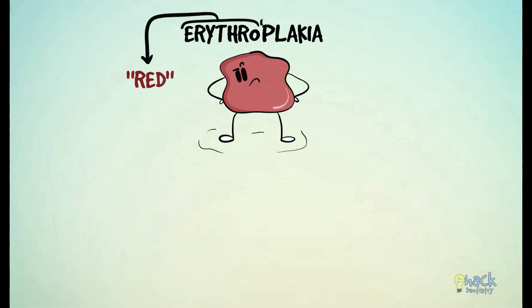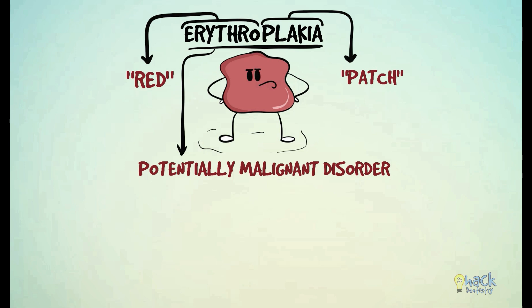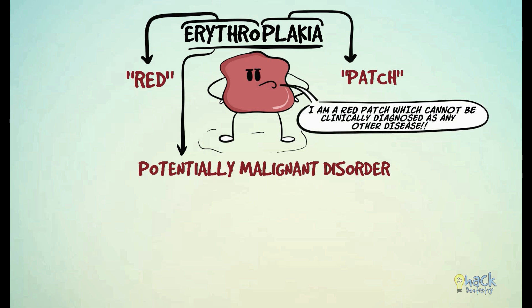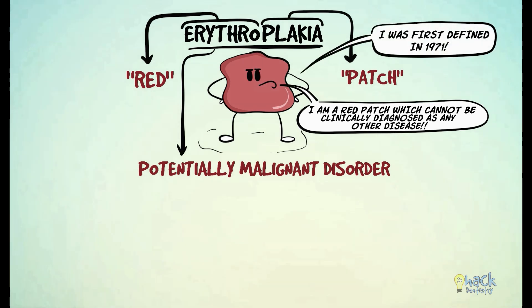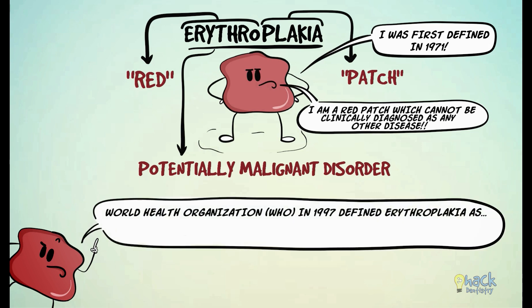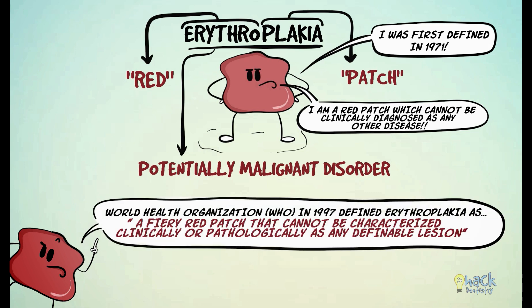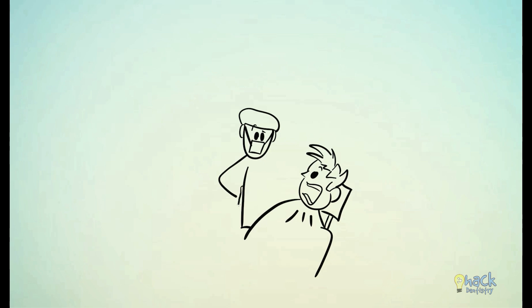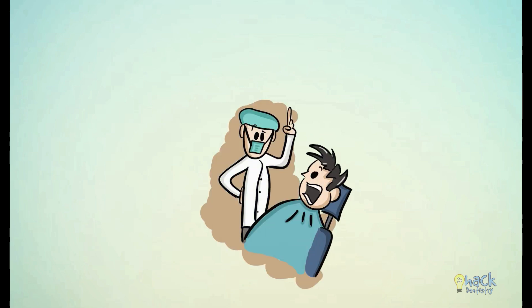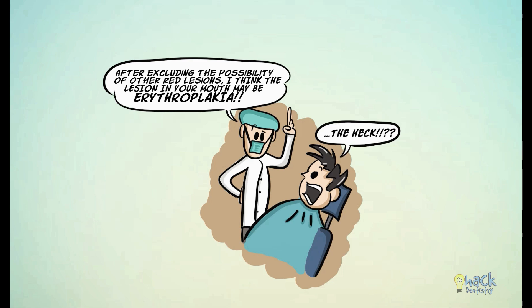Erythro stands for red and plakia for patch. Erythroplakia, classified as a potentially malignant disorder, is a red patch that cannot be clinically diagnosed as any other disease. It has had numerous definitions over the years since it was first defined in 1971. Erythroplakia was defined by the World Health Organization in 1997 as a fiery red patch that cannot be characterized clinically or pathologically as any other definable lesion. The diagnosis is one of exclusion of other red lesions rather than depending on a definable appearance of the lesion.